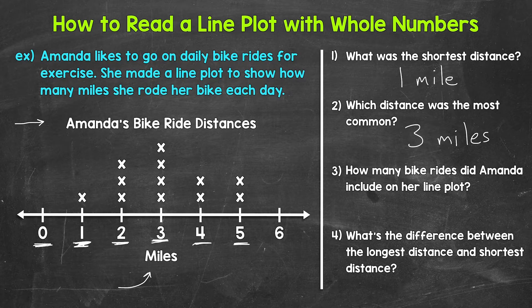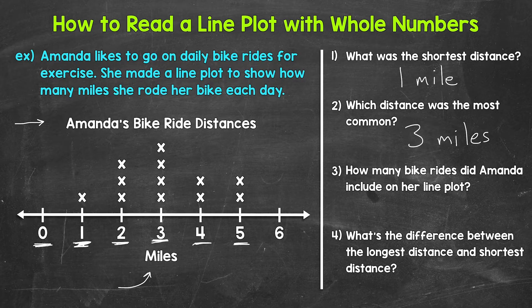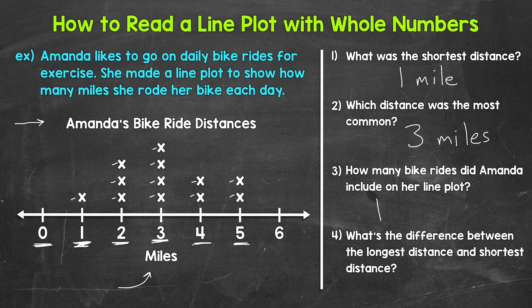Question three: how many bike rides did Amanda include on her line plot? We need to count all of the X's, since each X is one bike ride. Counting all the X's gives us 12. So Amanda included 12 bike rides on her line plot.